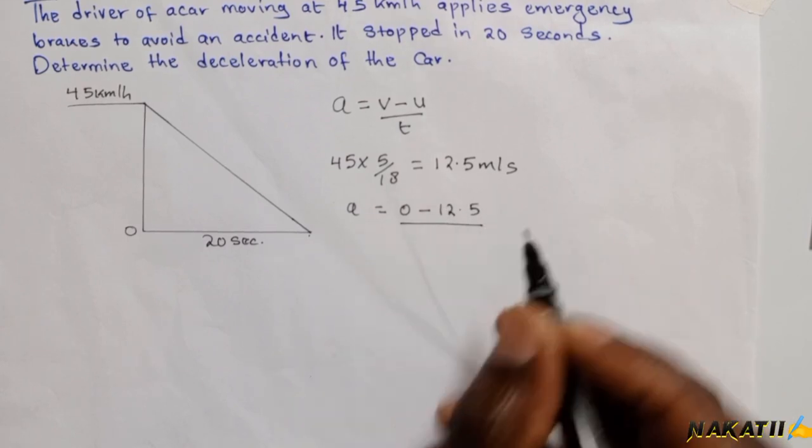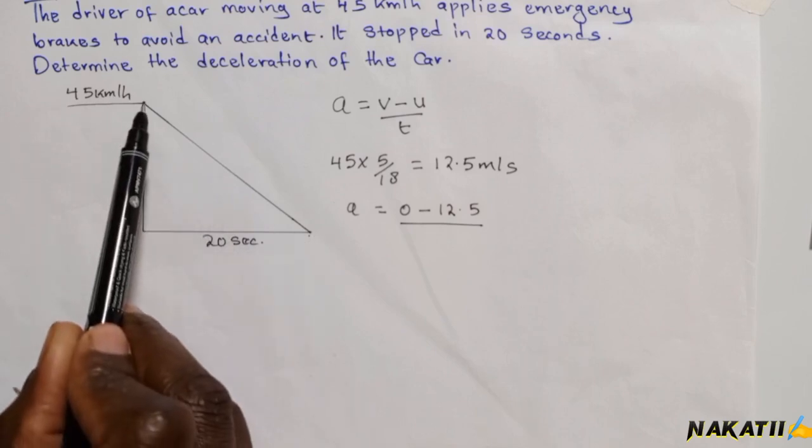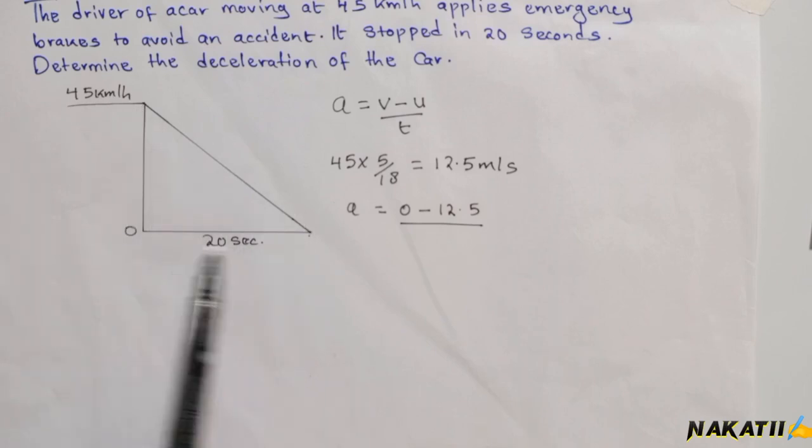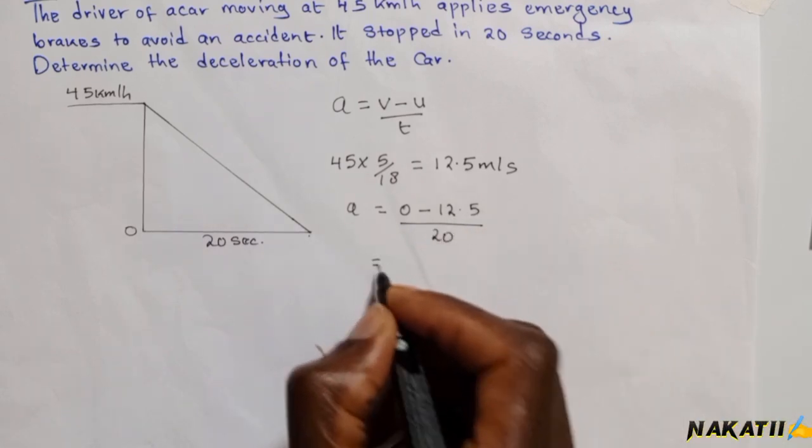This is divided by the time taken to decelerate. This is the time from when it started decelerating until it stopped, which is 20 seconds. This will be divided by 20.